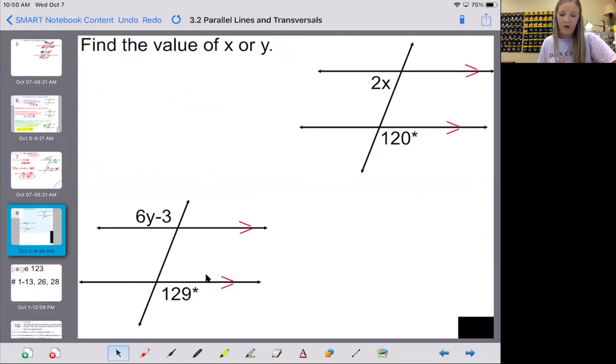Okay, so on the first one, I'm hoping that you notice that these two angles, 2X and 120, do not have a relationship between them. They are not alternate interior, alternate exterior, anything like that. So we need to somehow manipulate this so that we have one of the theorems that we were looking at. I'm going to put 120 right here as well using the vertical angles theorem.